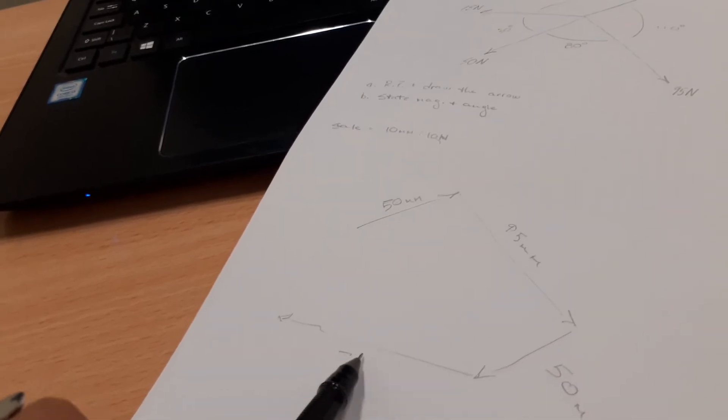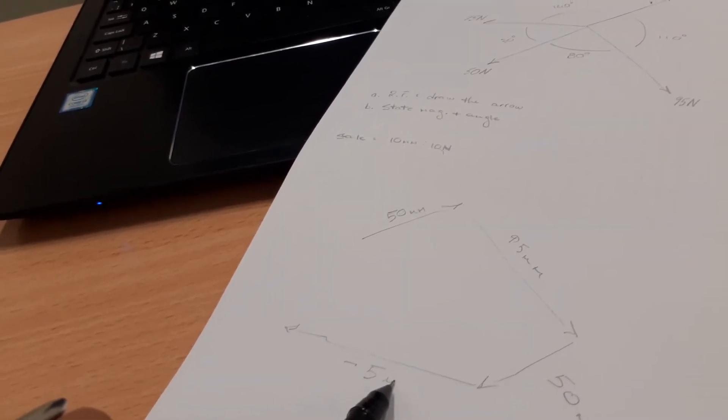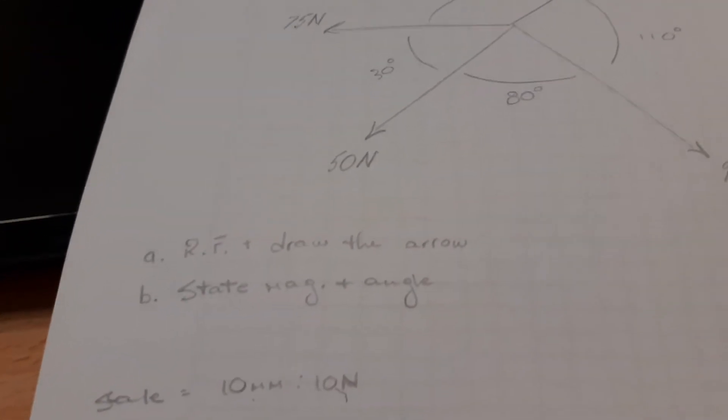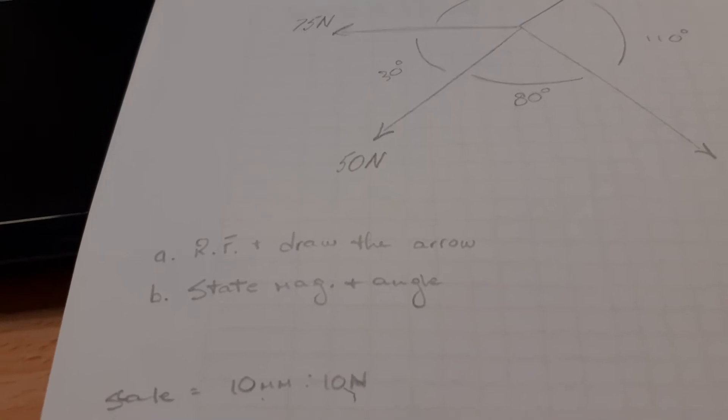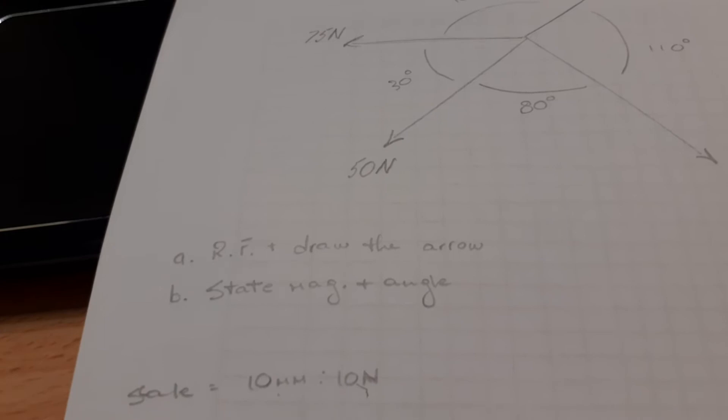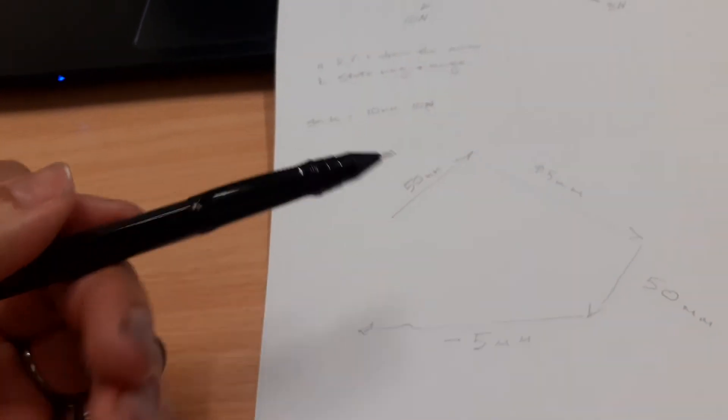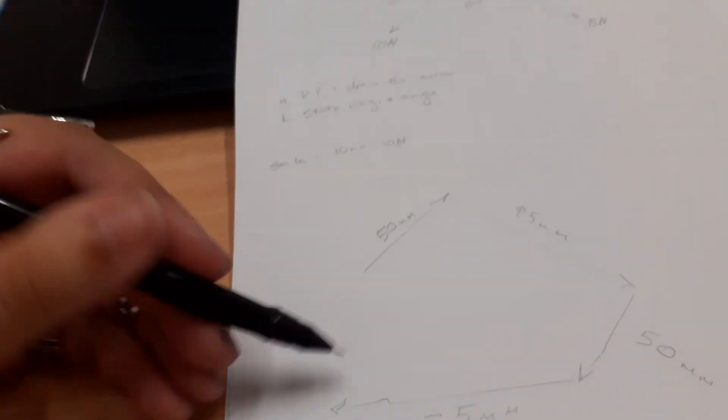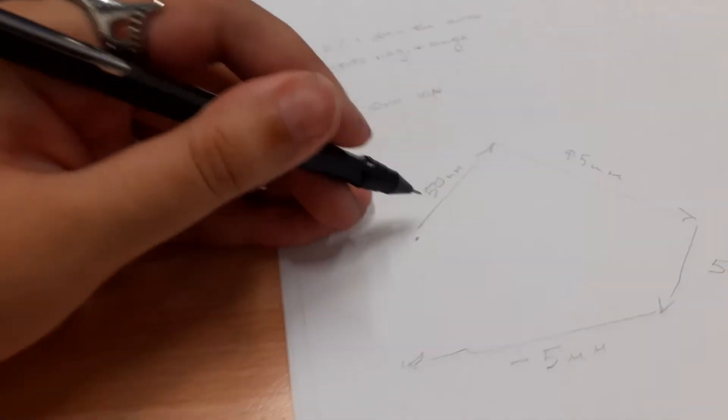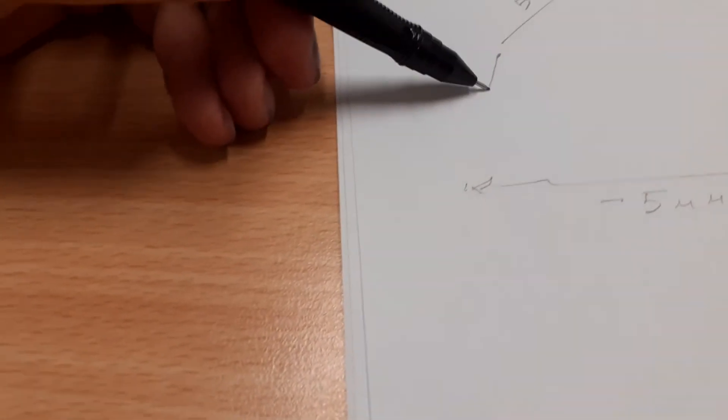Now for question A, we have to determine the resultant force and draw an arrowhead to indicate how it acts. What you have to do for the resultant force is join the final one you have to the first one you had. So this arrow over here would be your answer.